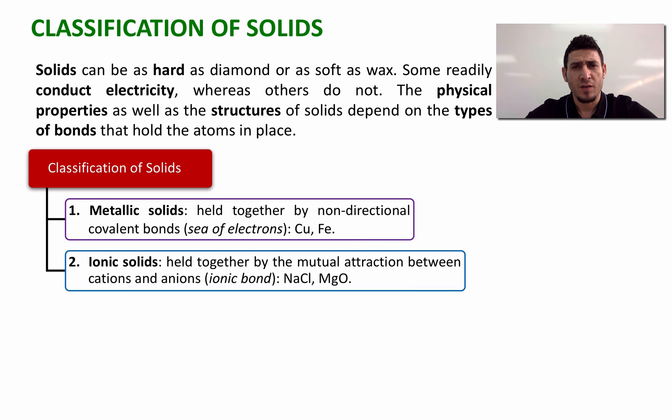The second type of solids is ionic solids, where the ions are held together by mutual attraction between a negatively charged ion and a positively charged ion, and this is what we call an ionic bond. Examples include sodium chloride and magnesium oxide.